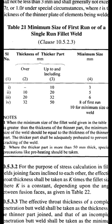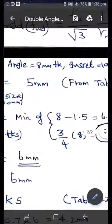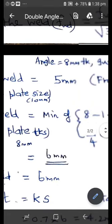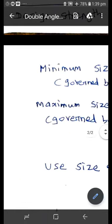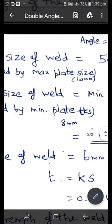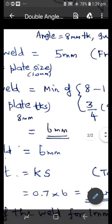The minimum weld size is 3 mm. For maximum size of the weld, it is governed by the minimum thickness of the connected plates, which is 8 mm here. We refer to Figure 17A and Figure 17B in the code.